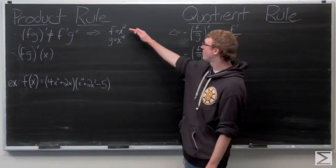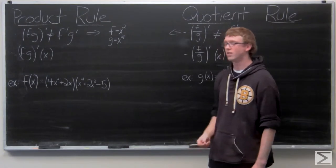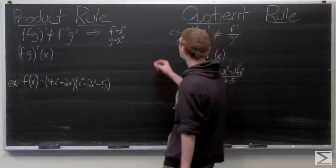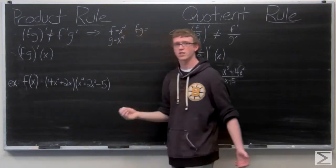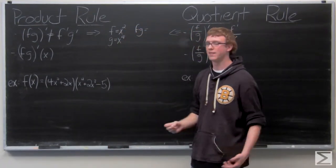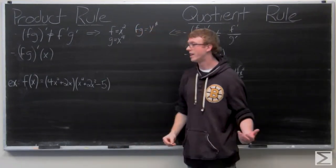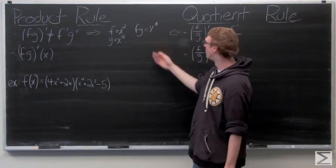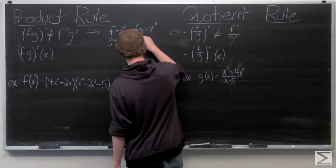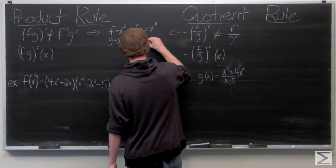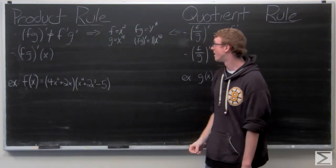So we have f of x equals x squared and g of x equals x to the ninth. We're going to do f times g: x squared times x to the ninth. You add the exponents — that's x to the eleventh. Now if we just take the derivative of x to the eleventh, we get 11x to the tenth.